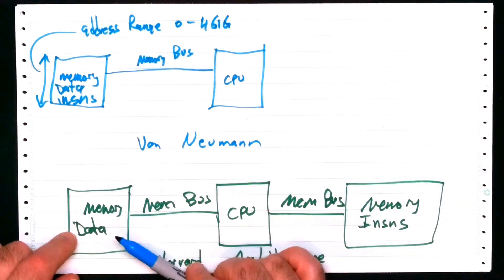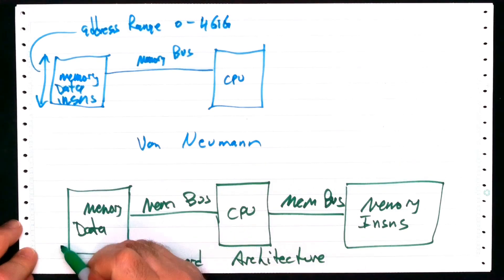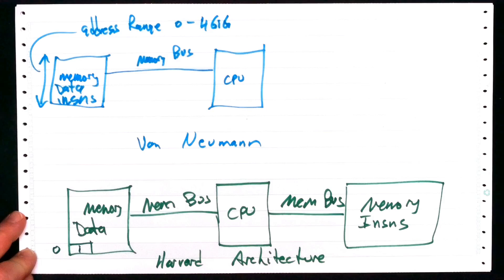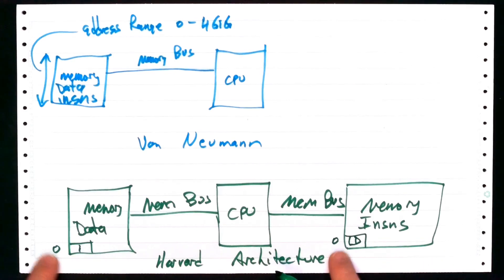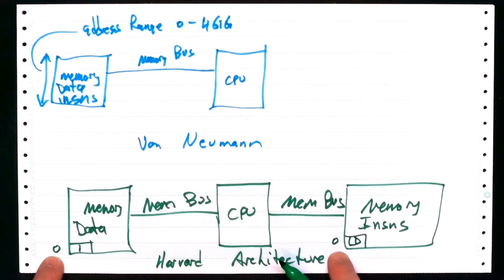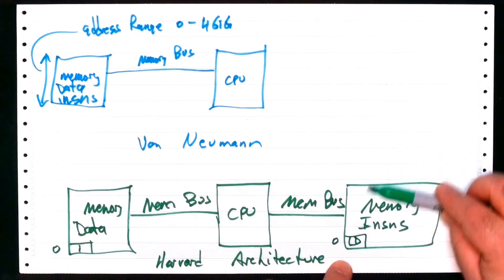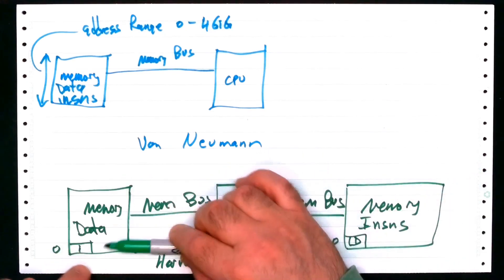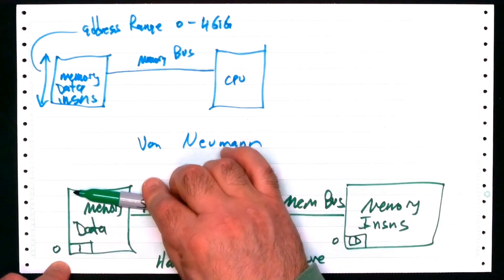If I have data stored in this memory at address zero, let's say I've got something down here at address zero. Maybe it's some variable called i in this memory. I could also have something in address zero in this memory over here. Maybe this is a load instruction. They could both have address zeros. This can get complicated. The address space of the instructions goes from zero to n here, and the address of the data in the address space of the data memory also goes from zero to n.